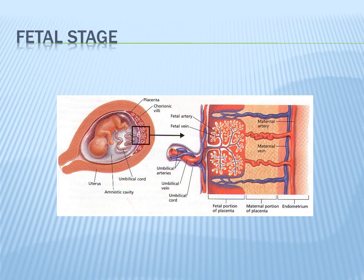We still don't know how the fetus breathes, so let's talk about the placenta — the respiratory organ of the fetus. There is a concentration gradient between fetal blood and maternal blood, allowing transfer of nutrients and oxygen to the fetus and allowing waste materials and CO2 to pass to the mother, without their blood ever mixing. In the picture, you can see the endometrium with the maternal vein and maternal artery.